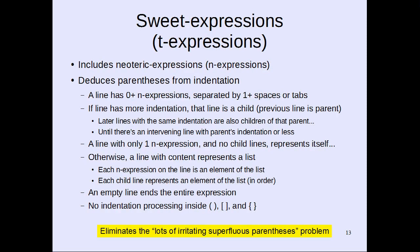Finally, we have Sweet Expressions, aka T-expressions. These include neoteric expressions but also deduce parentheses from indentation. A line has zero or more N-expressions separated by one or more spaces or tabs. If a line has more indentation, that line is a child of its parent. A line with only one N-expression and child lines represents itself; otherwise, the list of N-expressions is wrapped into a list. An empty line ends the whole expression, and there's no indentation processing inside parens, square brackets, and curly braces.